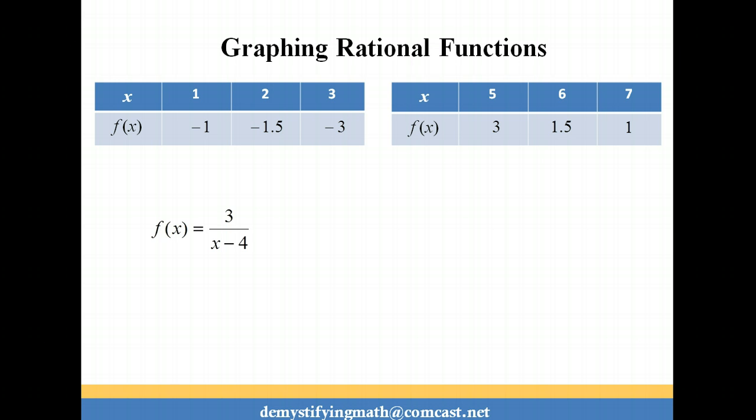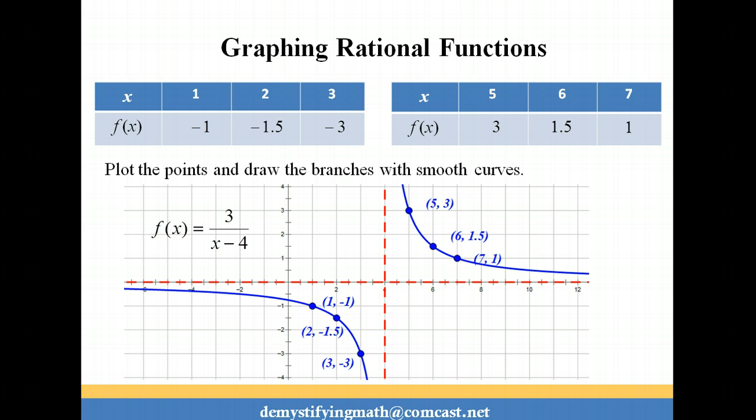Now we're going to plot those points onto the graph that we drew our asymptotes on, and then connect the points with smooth curves. So we get this graph. Notice that as the graph is heading into 4 from the right side, the graph is heading up to positive infinity. As it's heading into 4 from the left side, it's heading down to negative infinity.